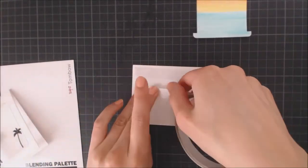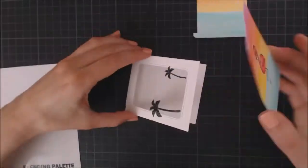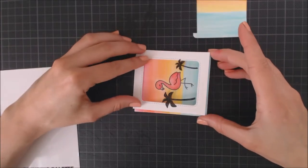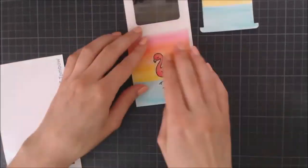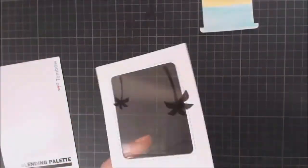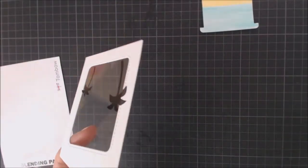Now I'm going to adhere my background to the magic slider pocket. I cut the panel bigger than the pocket so I can center the flamingo between the two palm trees, and then I can cut the excess paper with my scissors.